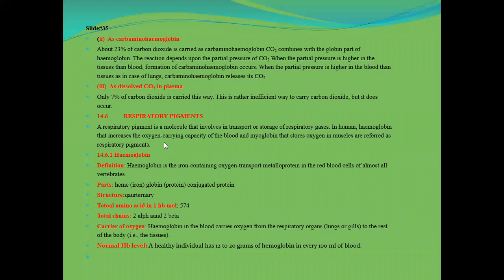Hemoglobin in the blood carries oxygen from respiratory organs — lungs or gills — to the rest of the body. So it is a carrier protein. The normal hemoglobin level is 12 to 20 grams per hundred ml of blood. This is a very important MCQ that repeats again and again in NMDCAT and ETEA exams, so keep it in mind.